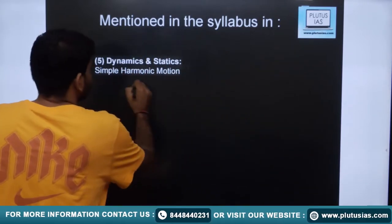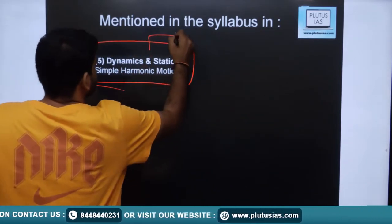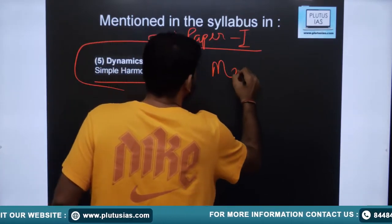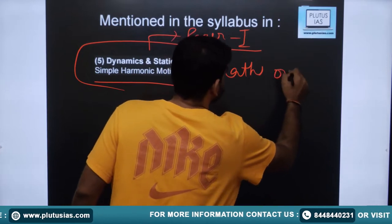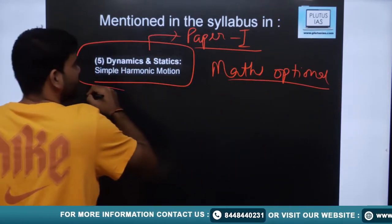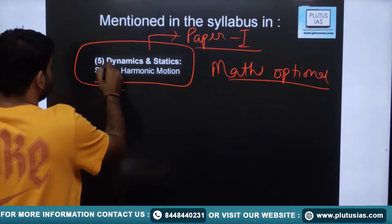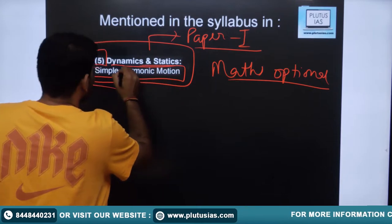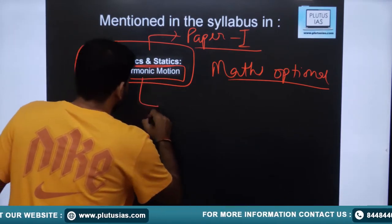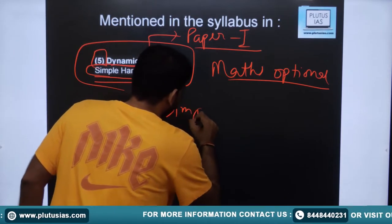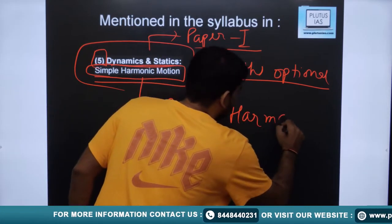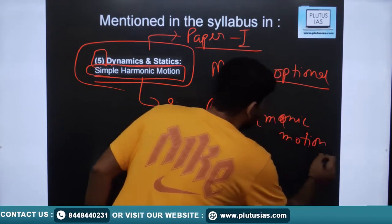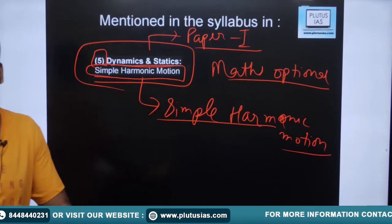Simple Harmonic Motion is in Paper 1 of Mathematics Optional, under the head of Dynamics and Statics. In the syllabus, a single keyword is mentioned: Simple Harmonic Motion. So we just have to focus on these two keywords. First of all, the motion should be only a simple motion — simple in the sense it should be engaging only in a linear direction.